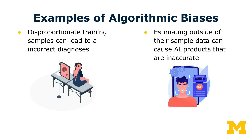AI models can also provide inaccurate information when estimating something outside the context of what they've been trained in. Many AI models are heavily trained on data from a handful of relatively well-known Western countries. When these models are used to make estimates about things in other cultures, they may prove inaccurate. For instance, the accuracy of facial recognition systems tends to vary across racial groups, in part because these systems were trained with more individuals from certain backgrounds than others.